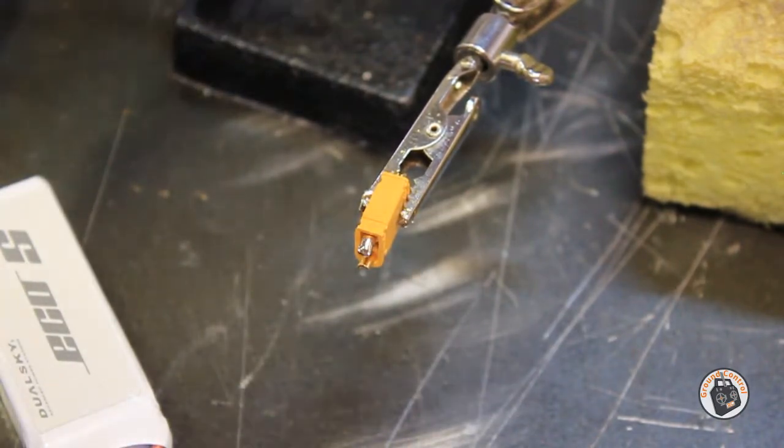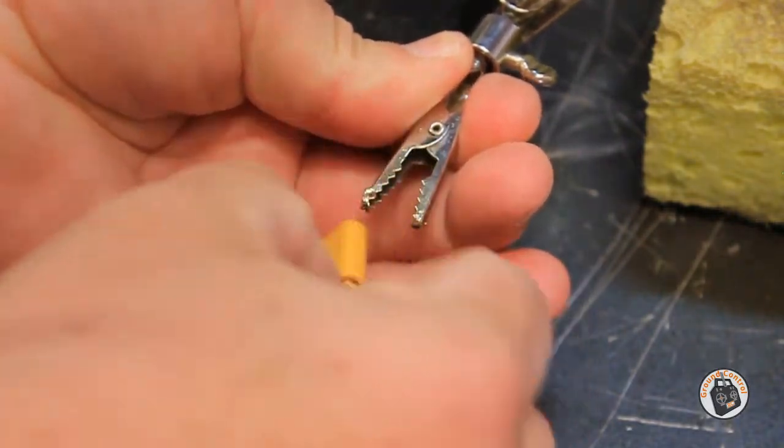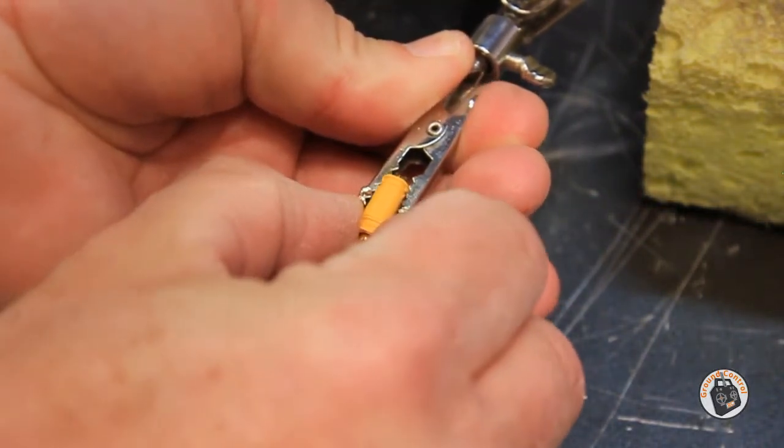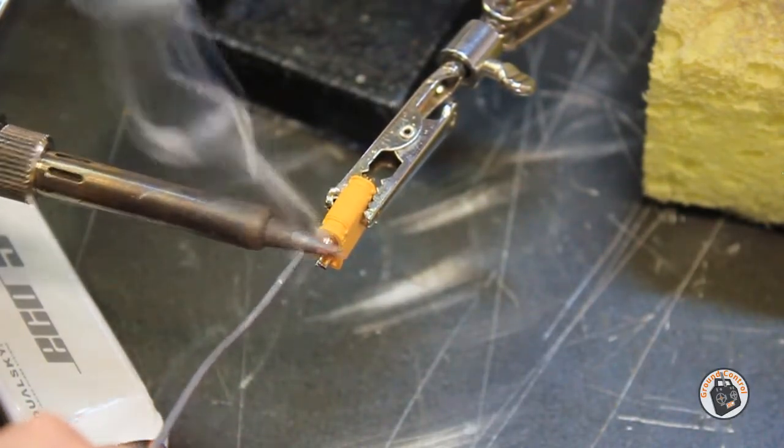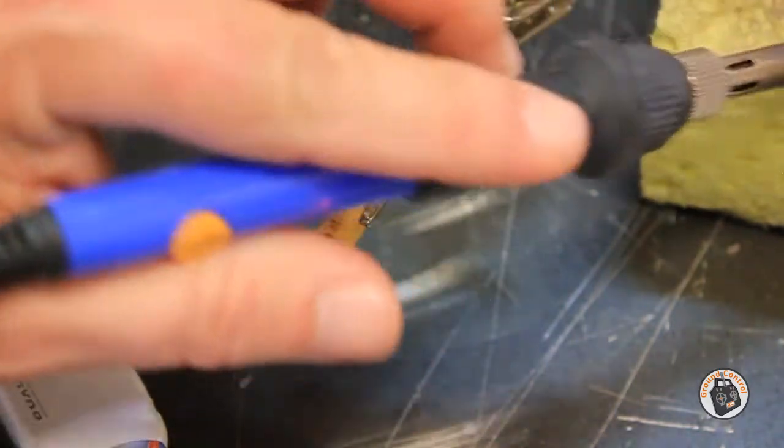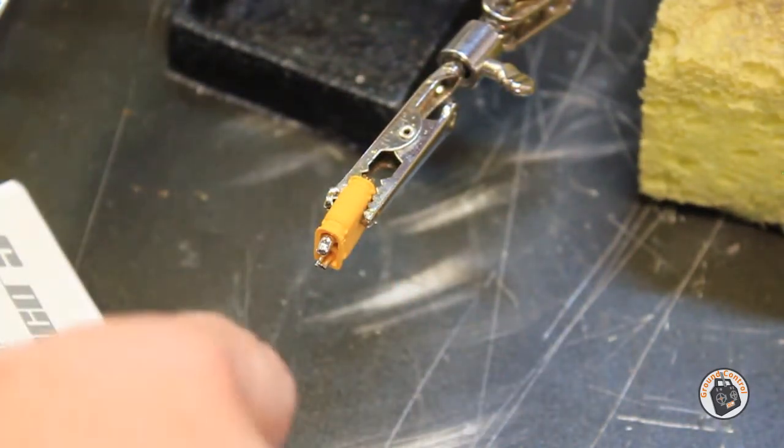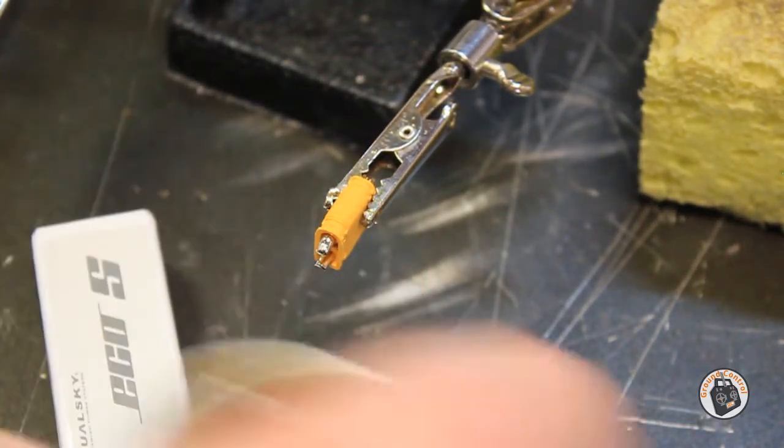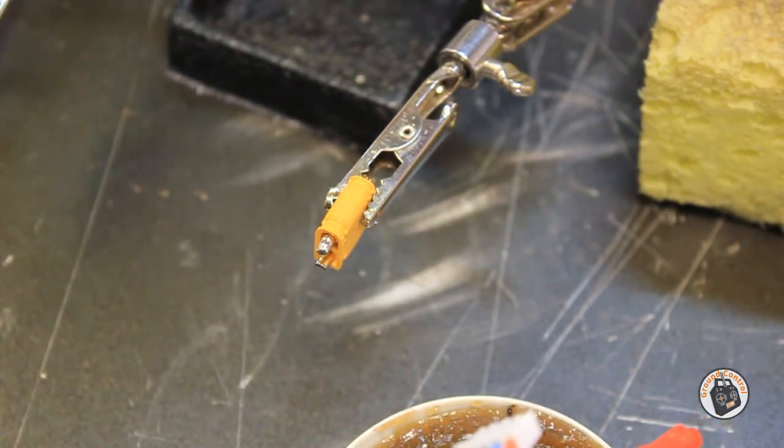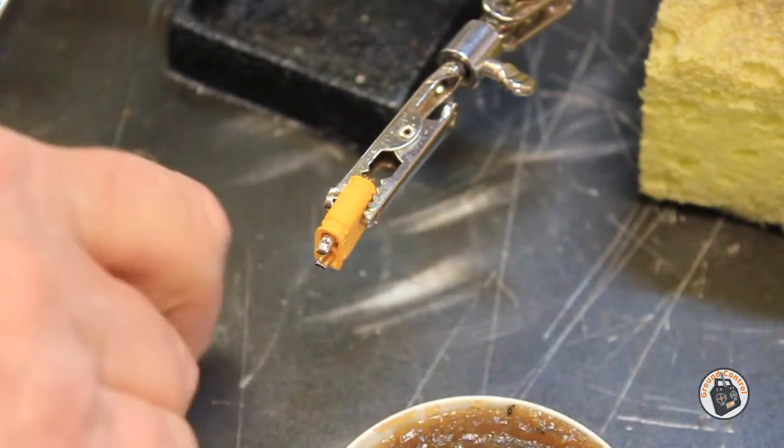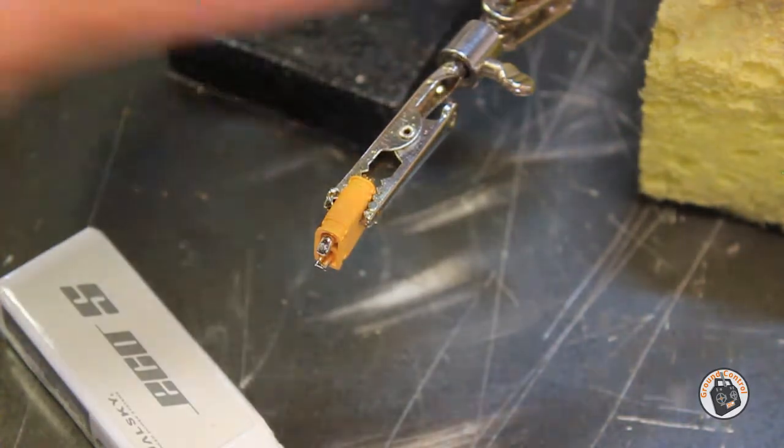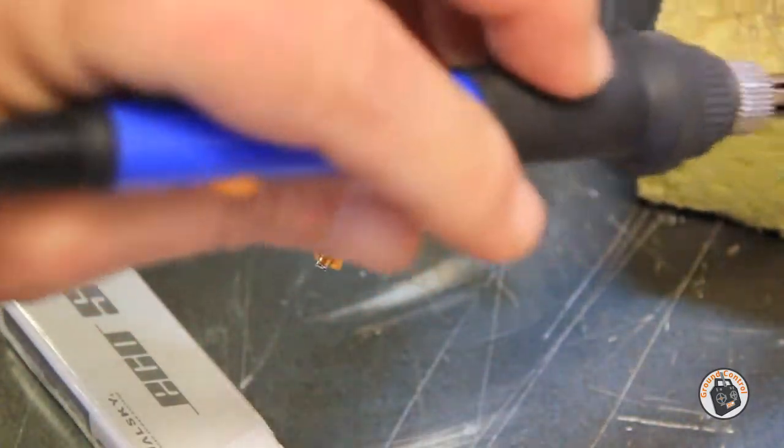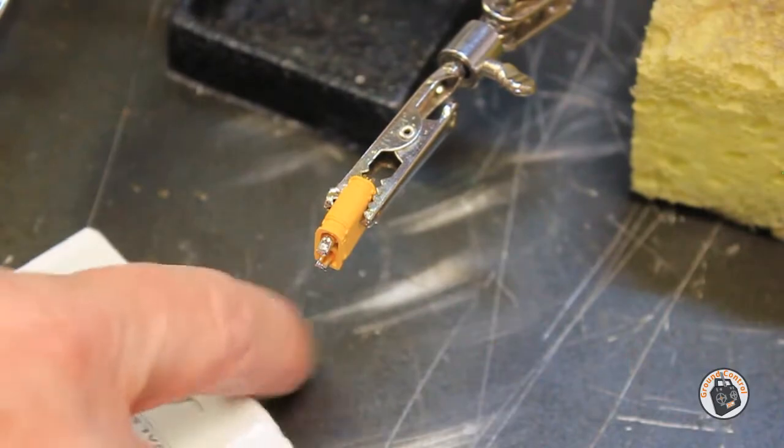While I've got the soldering iron hot, I'm going to go ahead and flip the connector over and put another little bit of solder inside the other channel. I'm going to take my wire here and I'm going to just poke it into the flux just to get a little flux on the wire. And I'm just going to put a little bit of solder on the tip of the wire. That will help transfer the heat.